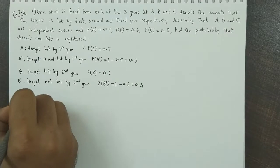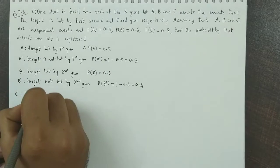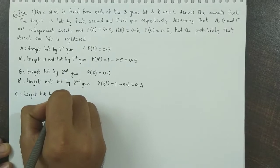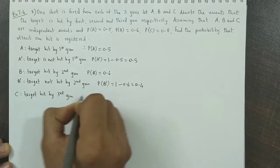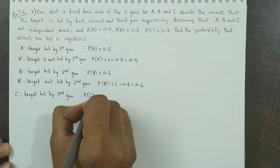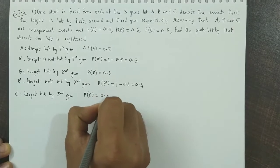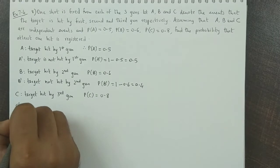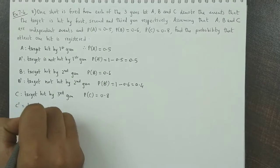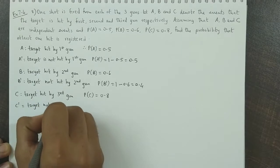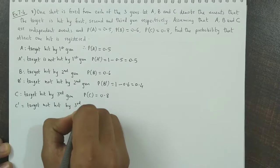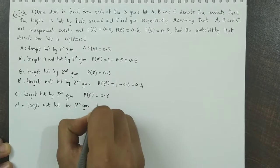C is the event that the target is hit by the third gun, and its probability is given as 0.8. So C complement means the target is not hit by the third gun.